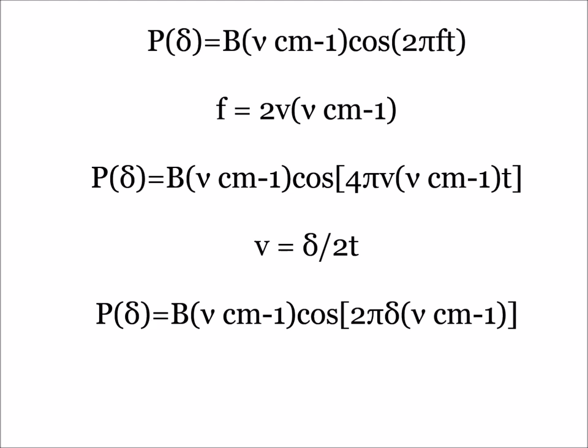Using the relation for the velocity derived previously, the equation for the cosine wave then becomes p of delta equals b of nu times cosine of 2 pi delta times nu.